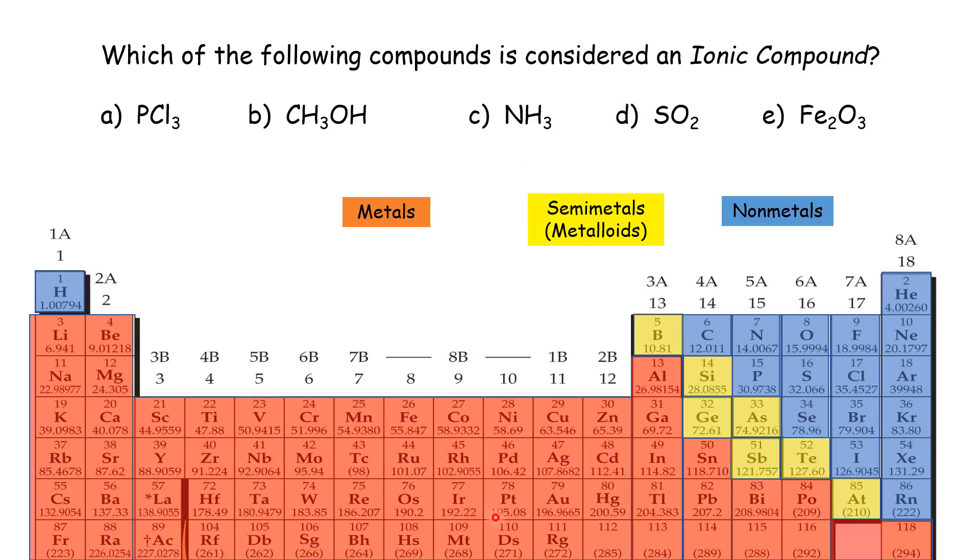We know on the left-hand side there are metals, the ones in reddish color. And then on the right-hand side, the blue ones, they are non-metals. Ionic compound has to contain both metal and non-metals.